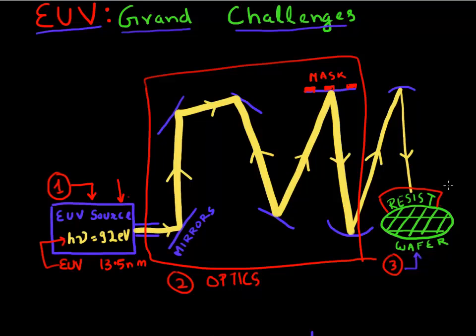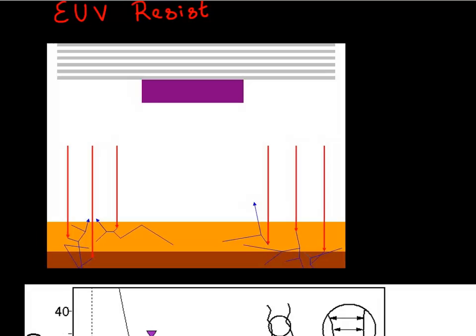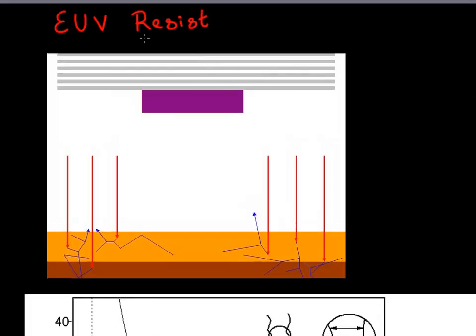What's so special? What's the deal about this resist? One of the main challenges with the EUV resist is that now it has to suddenly deal with photons which have a much higher energy. So all the previous resists were designed for photons which had an energy of 6 to 7 eV. Now, suddenly the energy which is hitting this resist is going to be 92 eV.